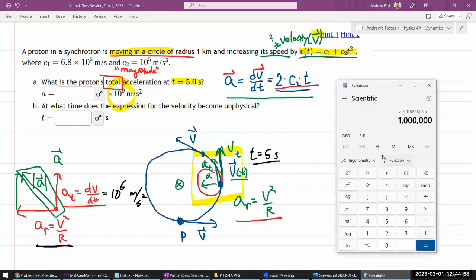So let me work out that value numerically. So I need a value of speed at time equals 5 seconds. So that will be just plugging in these numbers into this expression here. So C1, 6.8 times 10 to the power of 5, plus C2, 10 to the power of 5, times 5 squared, 5 seconds squared. 5 squared. So that's my speed at this moment in time, 5 seconds.